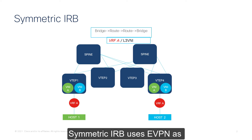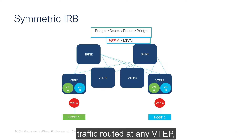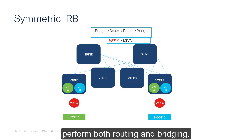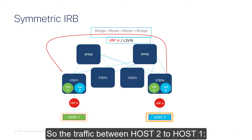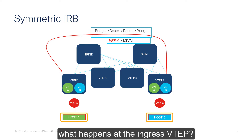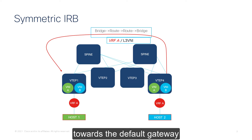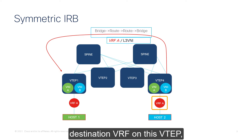Symmetric IRB uses EVPN as a layer 2 and layer 3 overlay with distributed inter-subnet traffic routed at any VTEP, whether it's egress or ingress. As a result, ingress and egress VTEPs perform both routing and bridging. For example, for traffic between host 2 to host 1, at the ingress VTEP the packet is bridged towards the default gateway and then routed into the destination VRF on this VTEP.